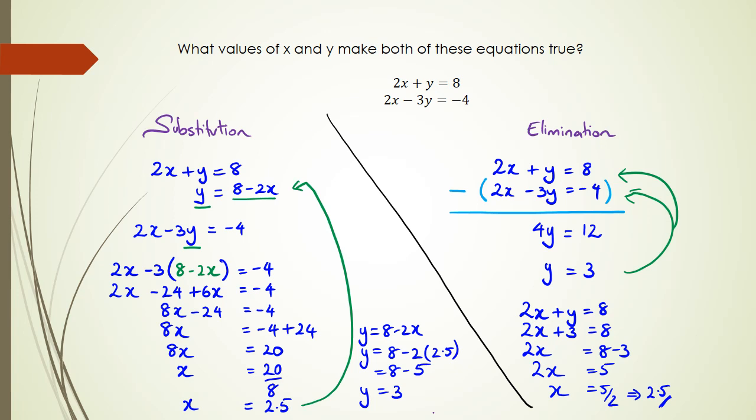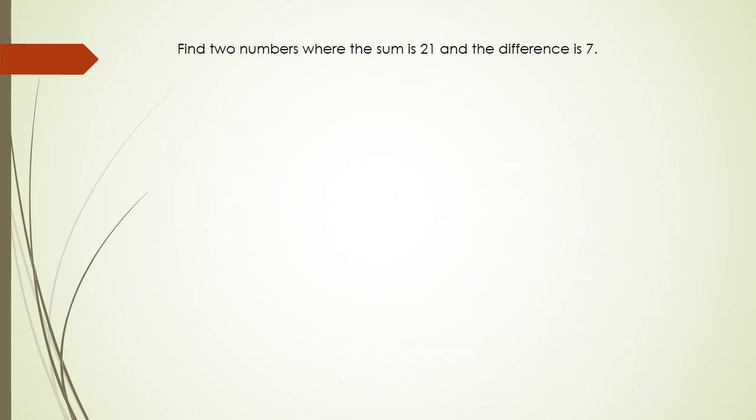So I have my two values. That's how you do this question, guys. Let's have a look at another question. What I've got is a question that says: find two numbers where the sum is 21 and the difference is 7.